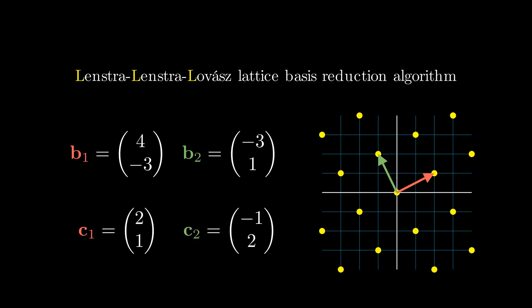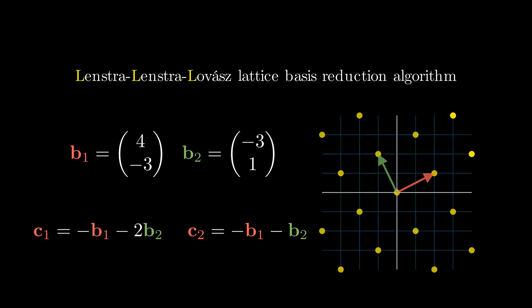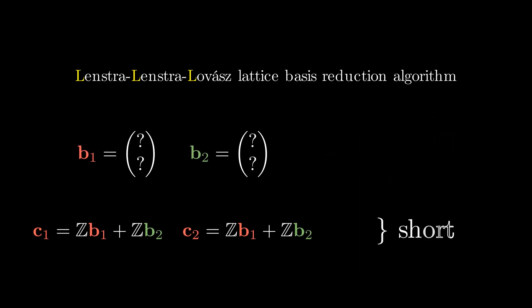These two new basis vectors c1 and c2 are actually points on the lattice, which implies they can be expressed as linear combinations of the original basis. Specifically, c1 is minus b1 minus b2, and c2 is minus b1 minus b2. So you can think of LLL as: given two original vectors b1 and b2 forming a basis, LLL finds a new basis that is much shorter — essentially a linear combination of the original vectors guaranteed to be short.